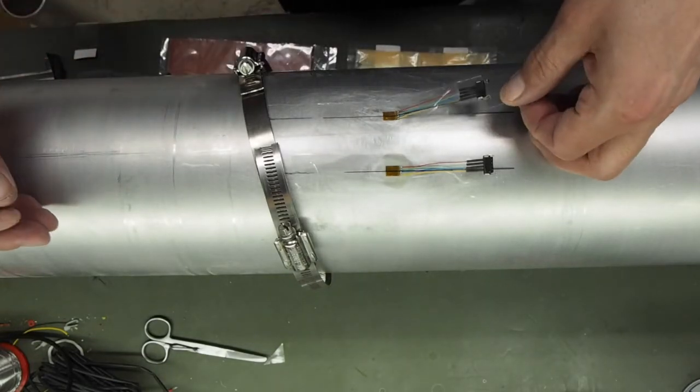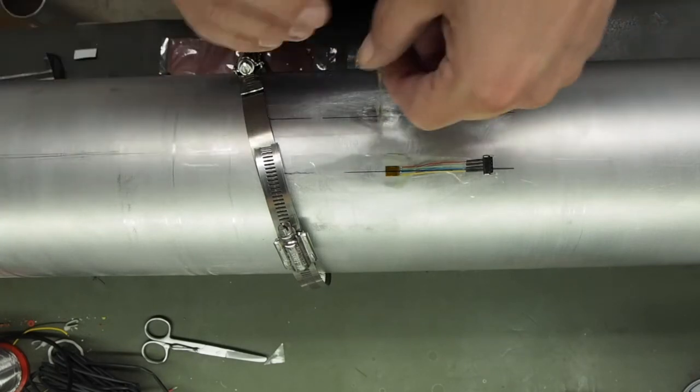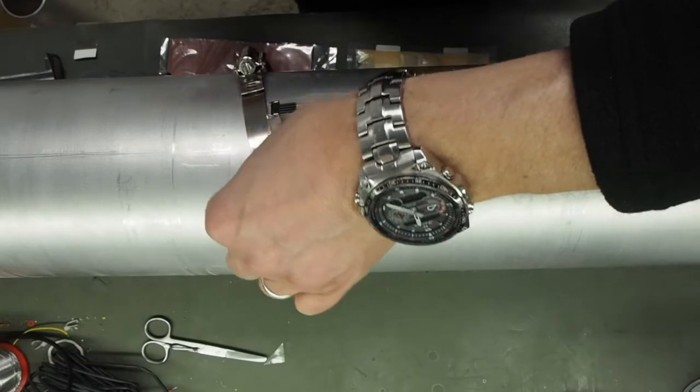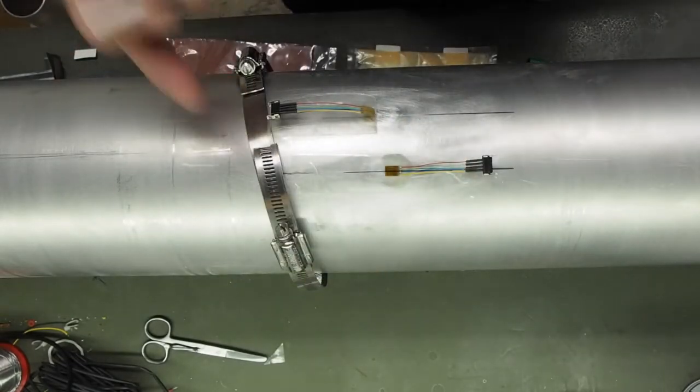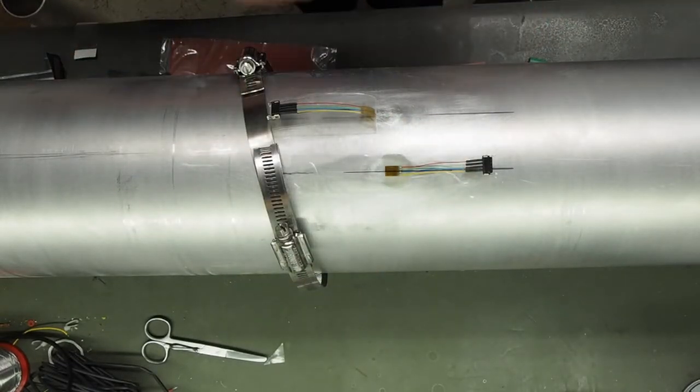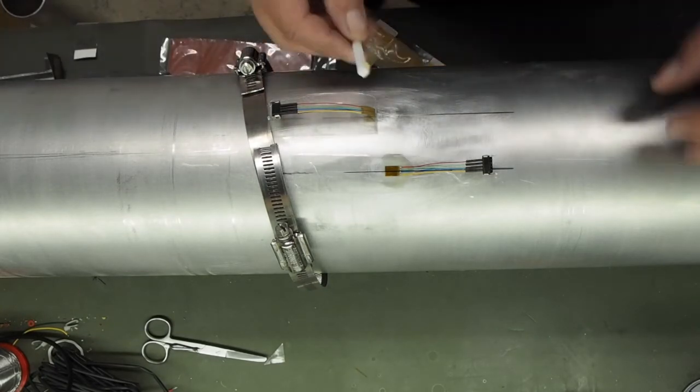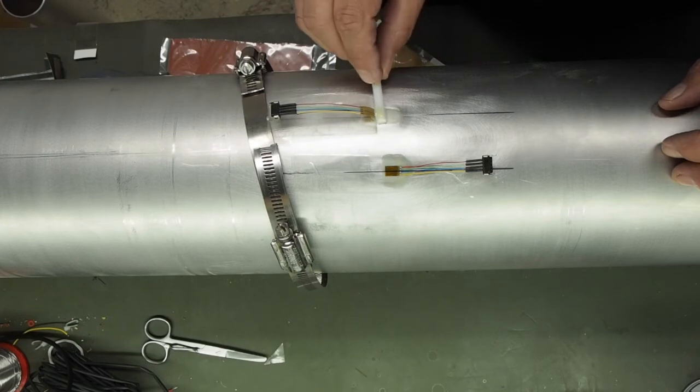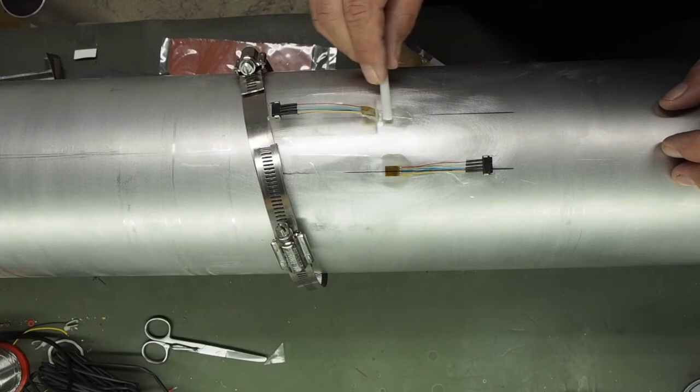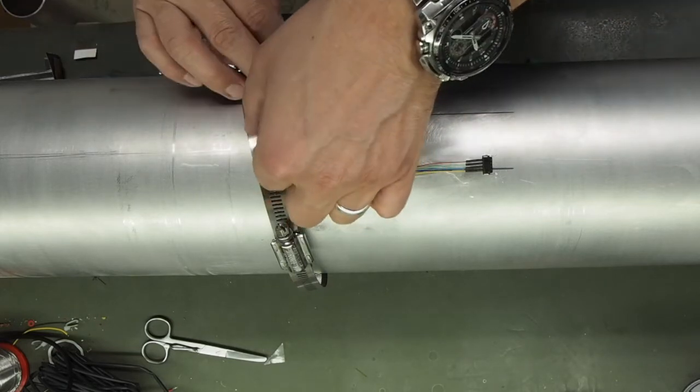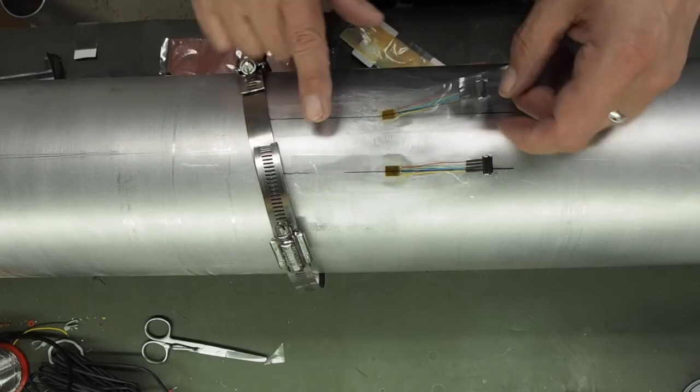And exactly the same on the other side. If you've got a bit of a long bit of tape on there you can actually stick that back just quickly while you're gluing. Again just smooth down gently with your finger.